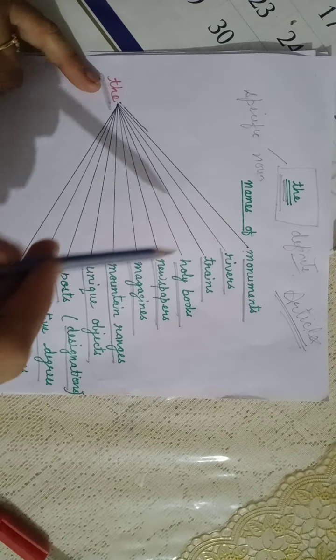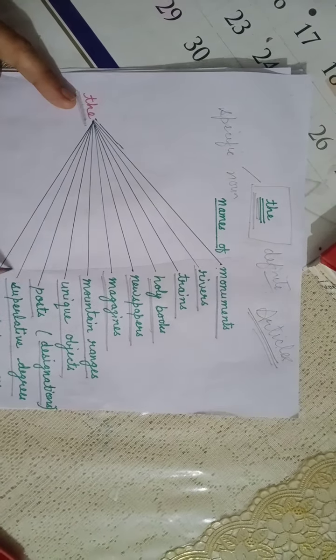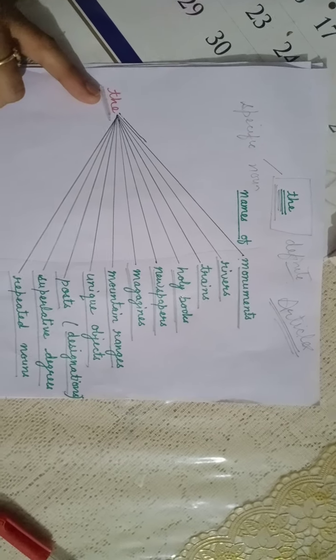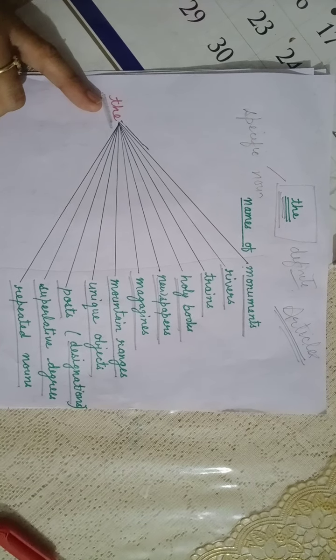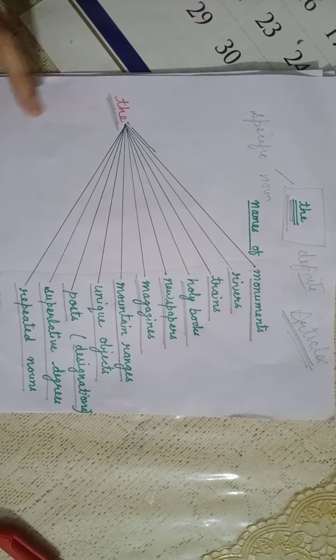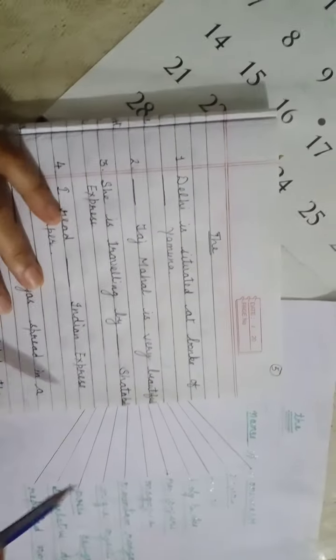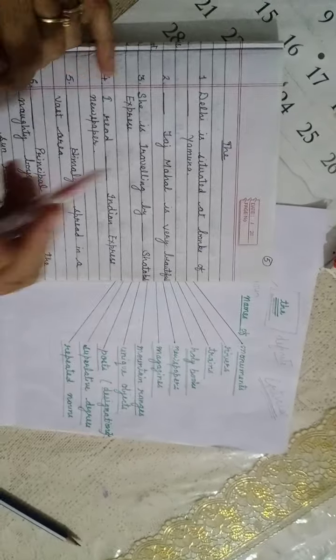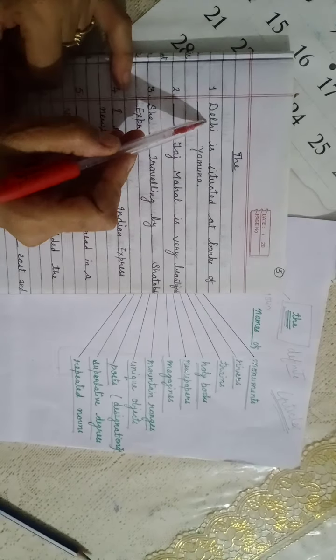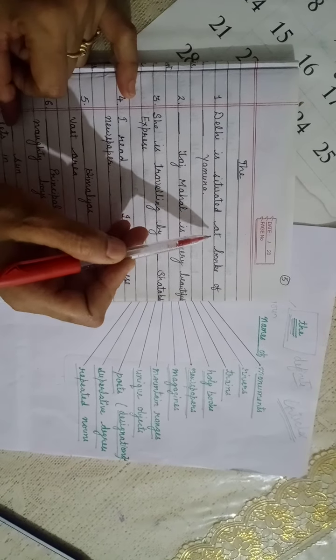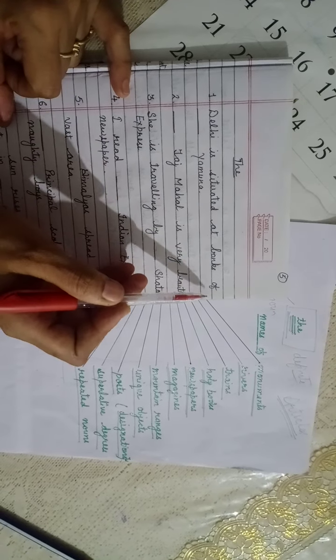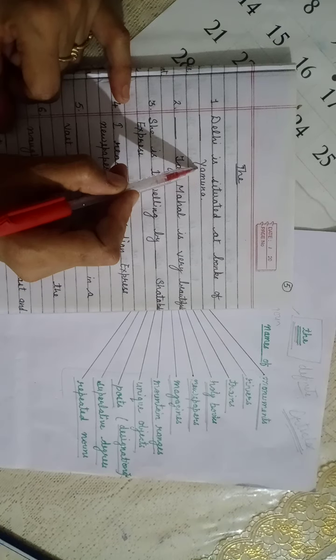I will be explaining all these to you through some examples. Here come the examples. First sentence: Delhi is situated at the banks of [blank] Yamuna.